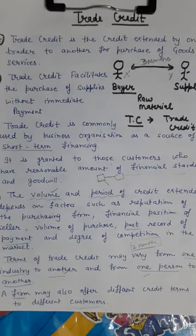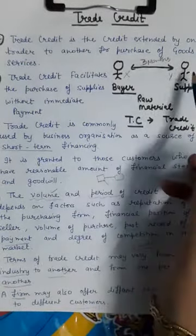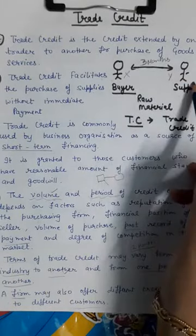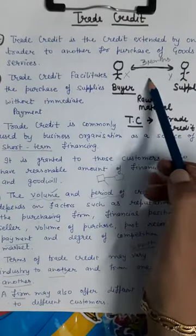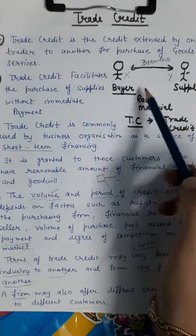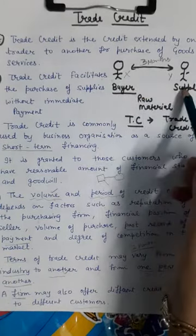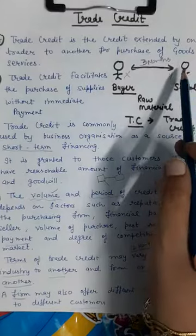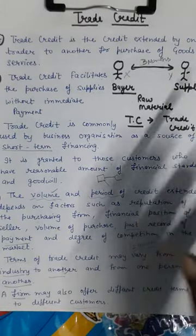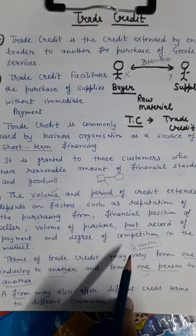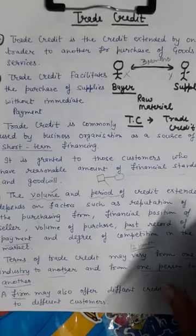Trade credit is a simple term — not complicated. One trader gives credit (udhar) to another trader for the purchase of goods and services. The buyer receives goods and signs a trade credit document as proof that payment will be made after a specified period, such as three months. Simply put, trade credit means credit extended by one trader to another for the purchase of goods and services. In the upcoming video we will discuss its advantages, so stay tuned. Thank you so much.